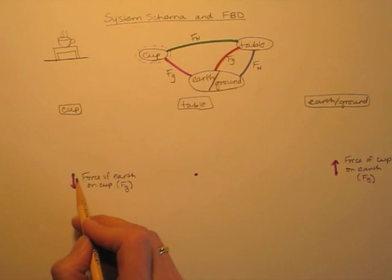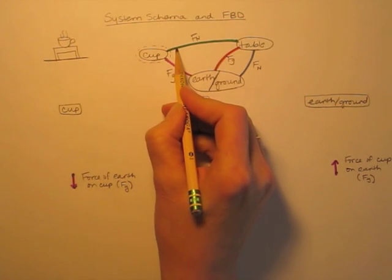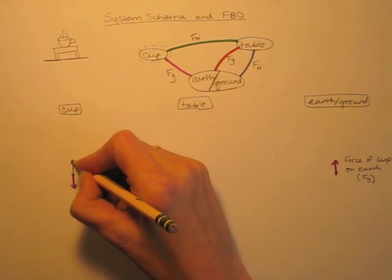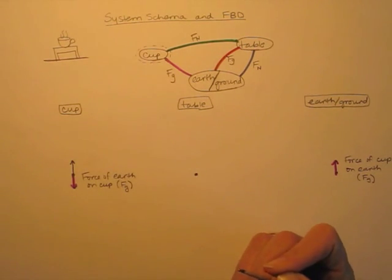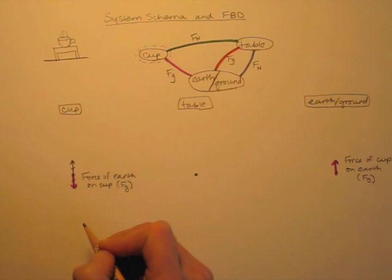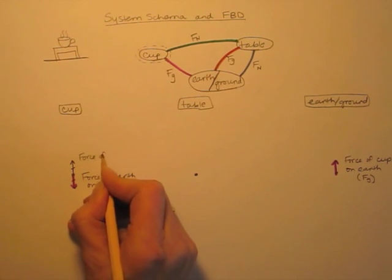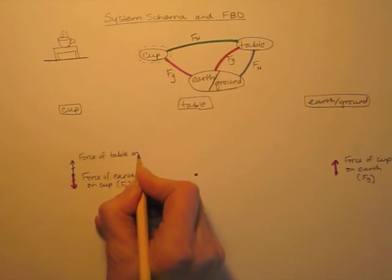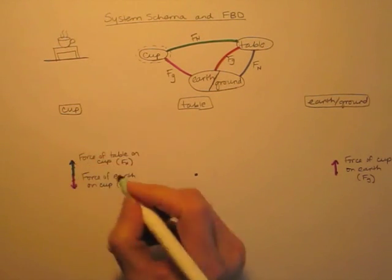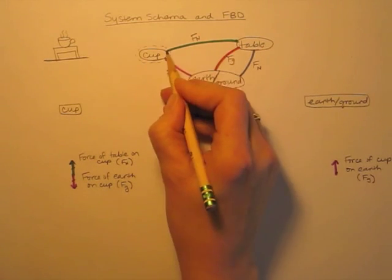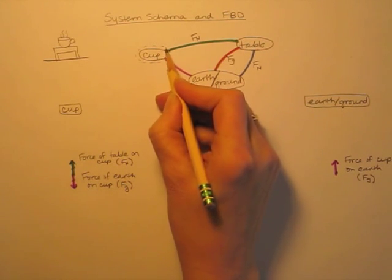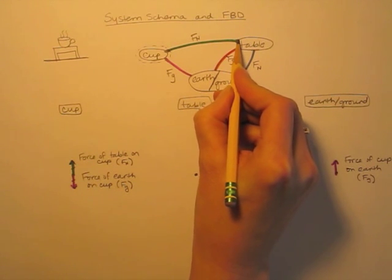Now back to the free body diagram of the cup. We have drawn the force of the earth on the cup. There's one more force on the cup, and that is the force of the table on the cup — an upward force. Because the cup is not accelerating up and down, the forces on the cup are balanced, so this force has the same magnitude as the gravitational force. That is the force of the table on the cup, and that is a normal force. Now where's the other force that's part of this interaction? This force was the force of the table on the cup, so the other part of that interaction is the force of the cup on the table.